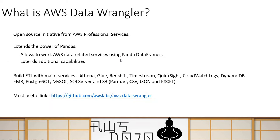Just to give you an introduction or recap about what AWS Data Wrangler is: it is one of the open source initiatives from AWS Professional Services. Basically, Data Wrangler is a Python module — a Python package — which extends the power of Pandas. It enables you to use Pandas along with AWS services, meaning you can read AWS services data into a Pandas DataFrame, and data from the DataFrame can also be written back to AWS services.